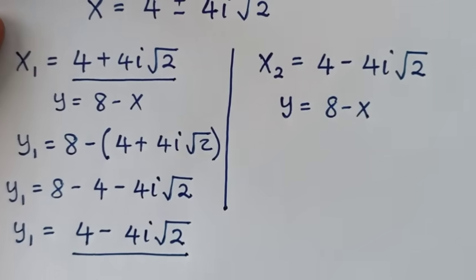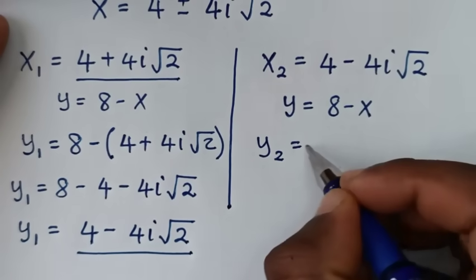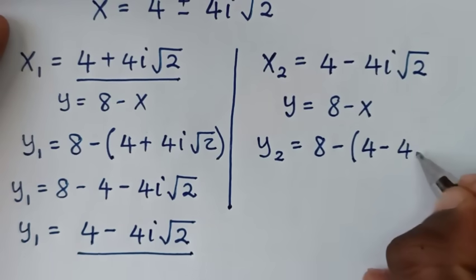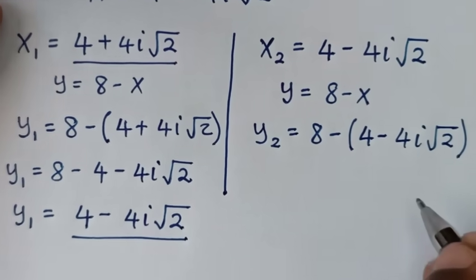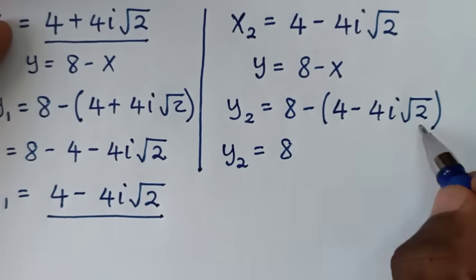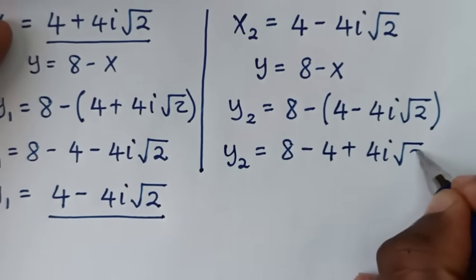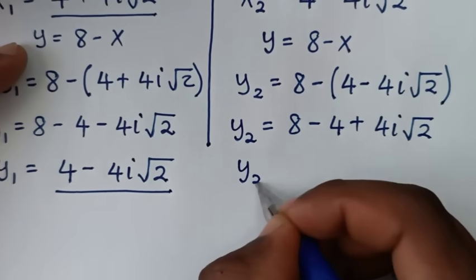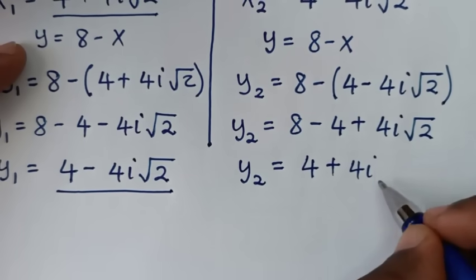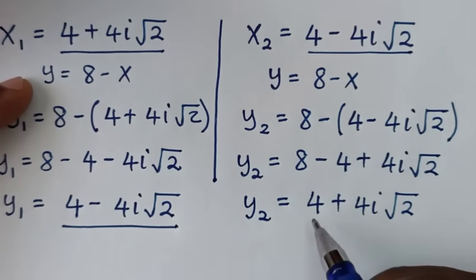Now to get y2, y2 is equal to 8 minus x2. x2 is 4 minus 4i square root of 2. So it will be y2 is equal to 8; taking the negative inside it will be minus 4, and negative and negative gives positive 4i square root of 2. So y2 is equal to 8 minus 4, it is 4, then plus 4i square root of 2.